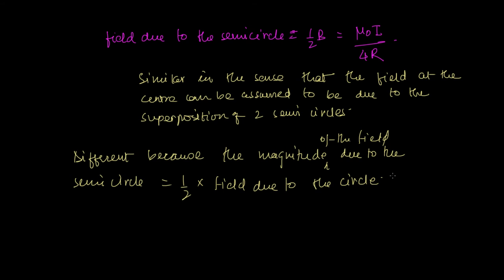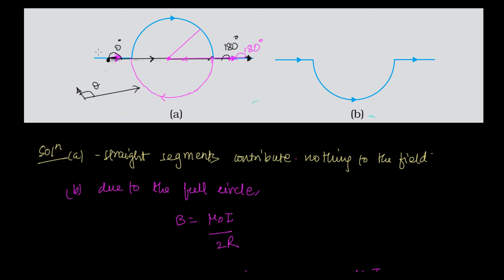The direction is the same — they are vectors added in the same direction. By the right-hand rule, curling your fingers around the loop, the thumb points into the field. This half contributes μ₀I / 4R downward, and the other half also contributes μ₀I / 4R downward, summing to μ₀I / 2R downward.